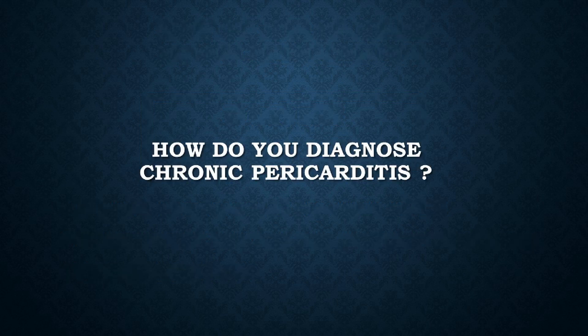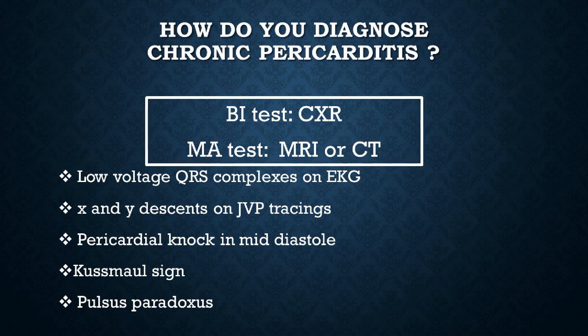Question: How do you diagnose chronic pericarditis? Any of the causes that can cause acute pericarditis can lead to chronic pericarditis, which manifests with fibrosis, calcification, and constriction of the pericardium. The best initial test is chest X-ray and the most accurate test is MRI or CT scan. You will see on EKG low-voltage QRS complexes, and X and Y descents on JVP tracings — very high yield. You will also hear the pericardial knock in mid-diastole.